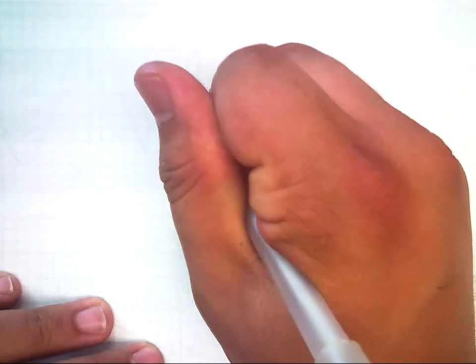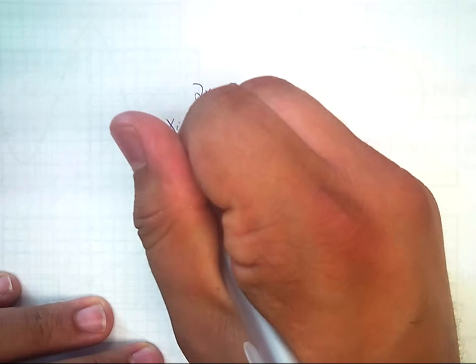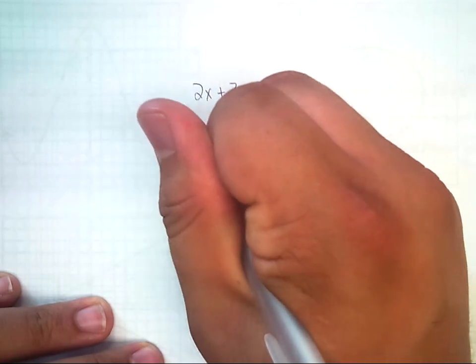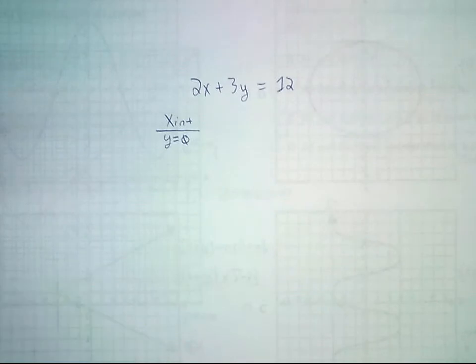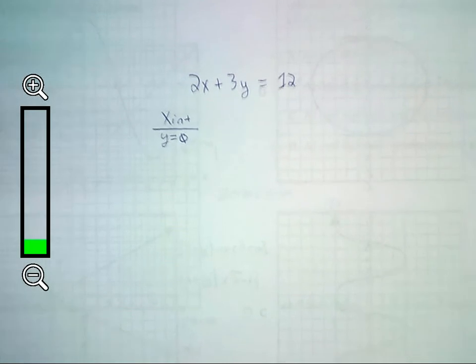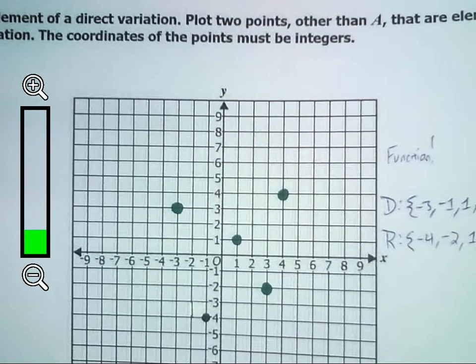To find the x-intercept, you're actually going to make y equal zero. And you might be saying to yourself, whoa, that doesn't make any sense. If I'm trying to find the x-intercept, why is y zero? Let's take a look at the graph.